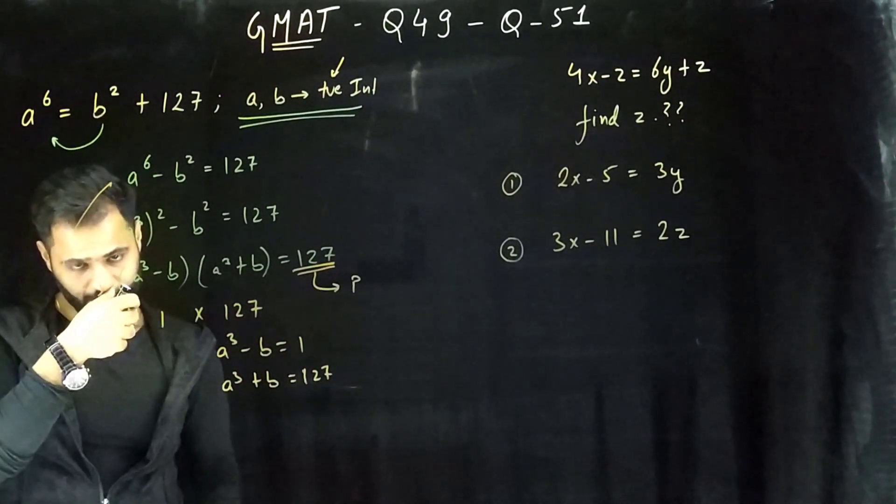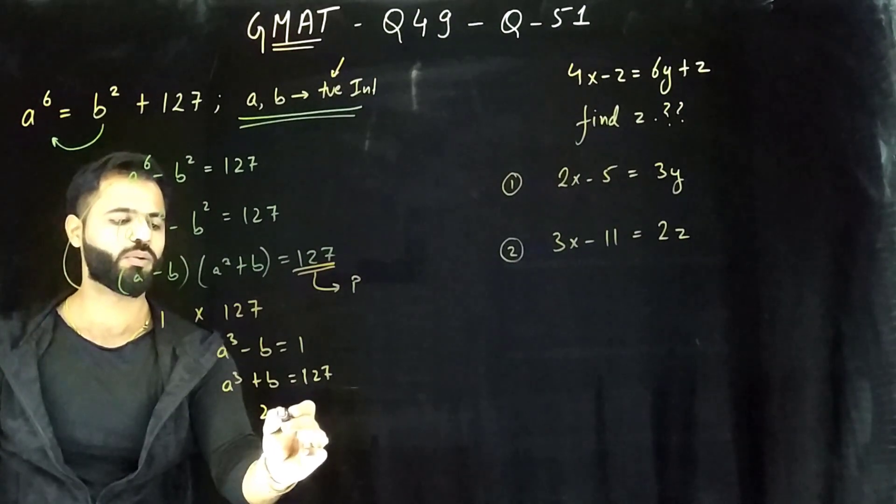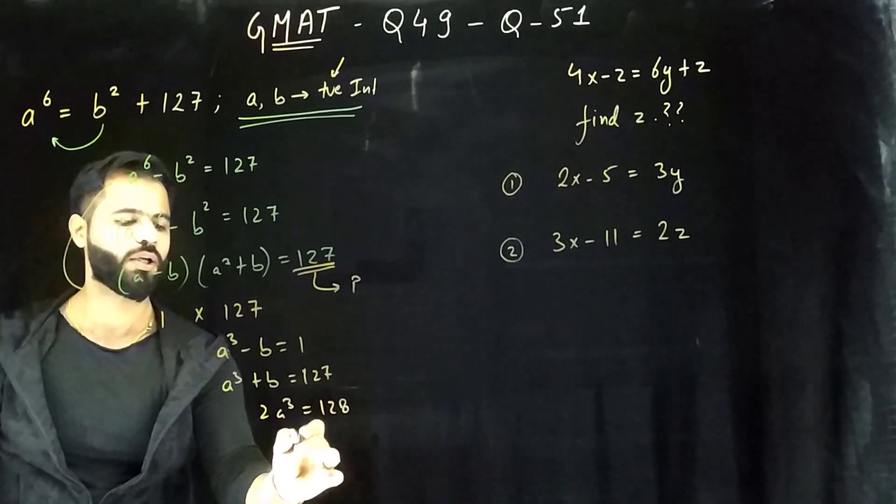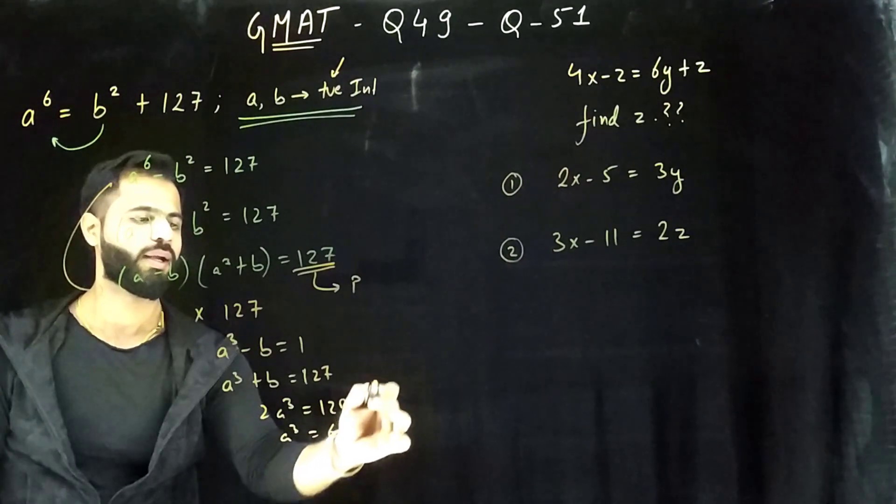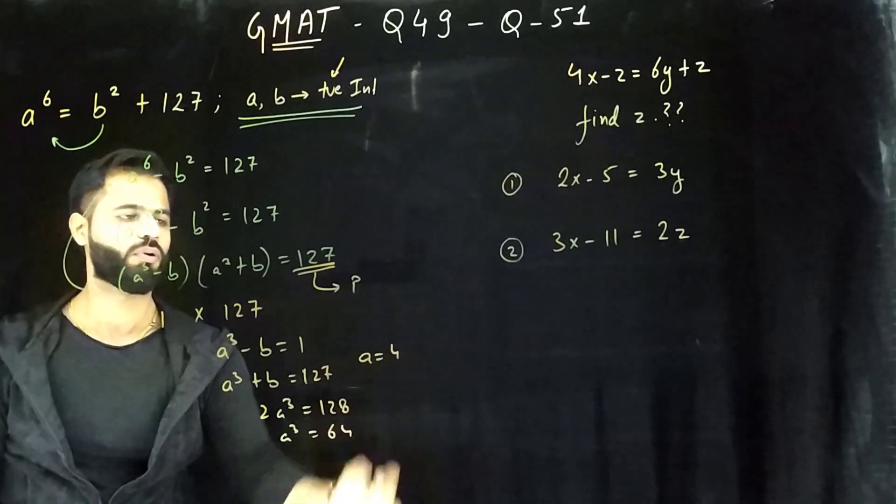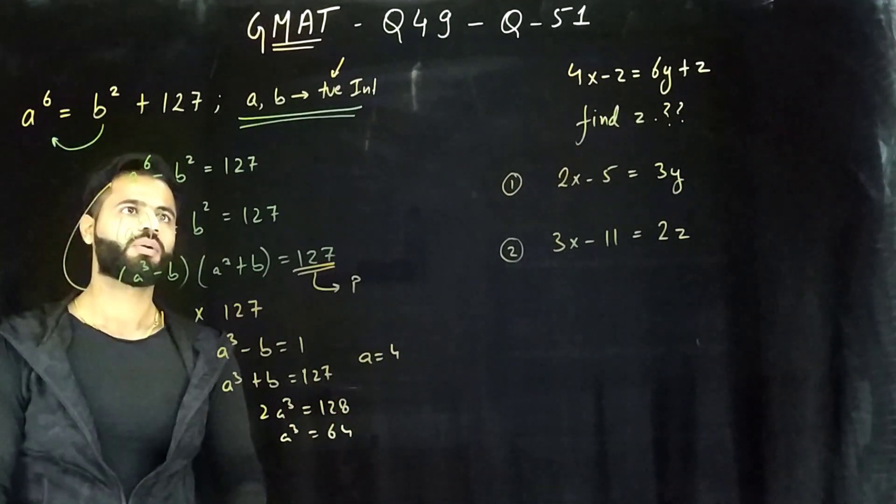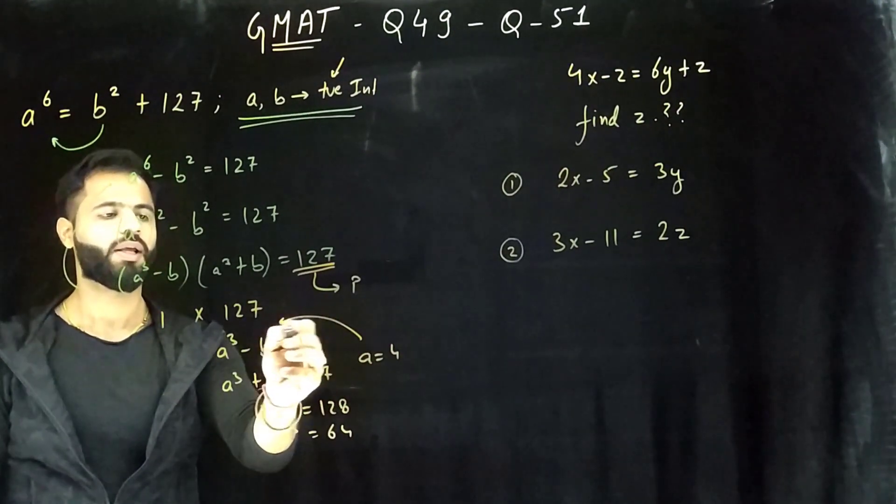A³ - b equals 1 and a³ + b equals 127. Now you can clearly, easily solve it. If you add it up, you get 2a³ equals 128, a³ equals 64, and hence a is equals to 4. And you can go ahead and find out b as well, putting a = 4 over here.